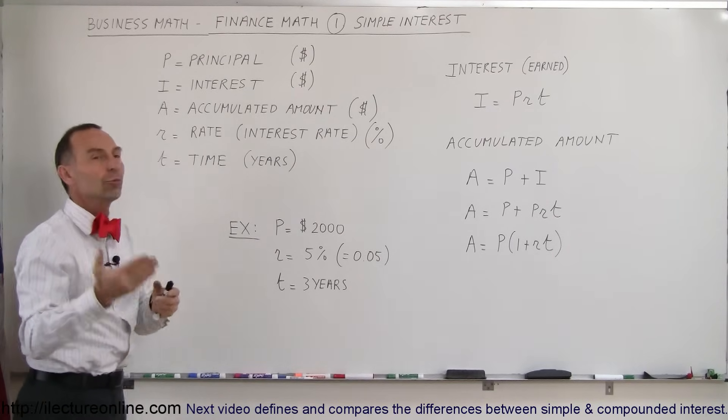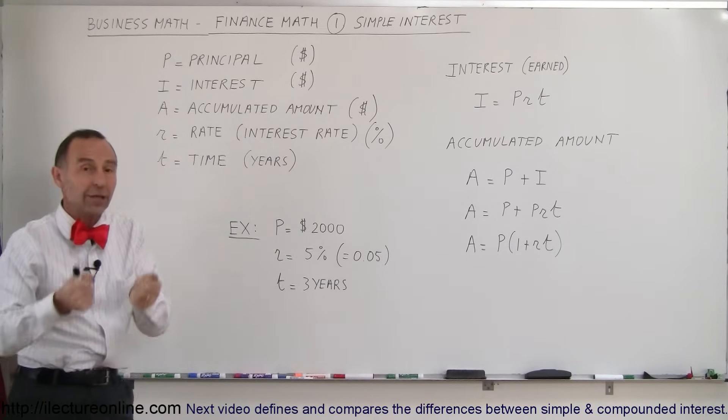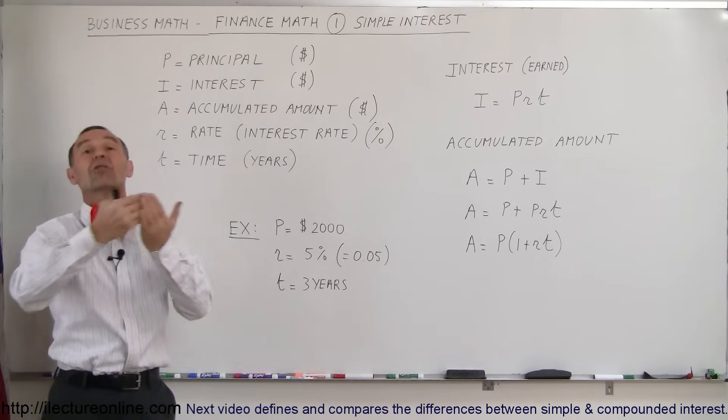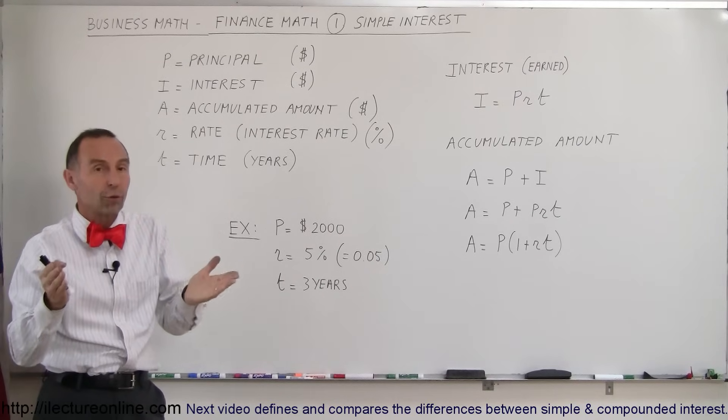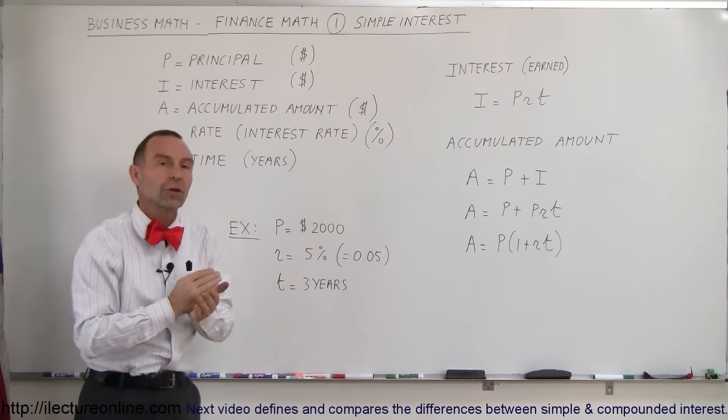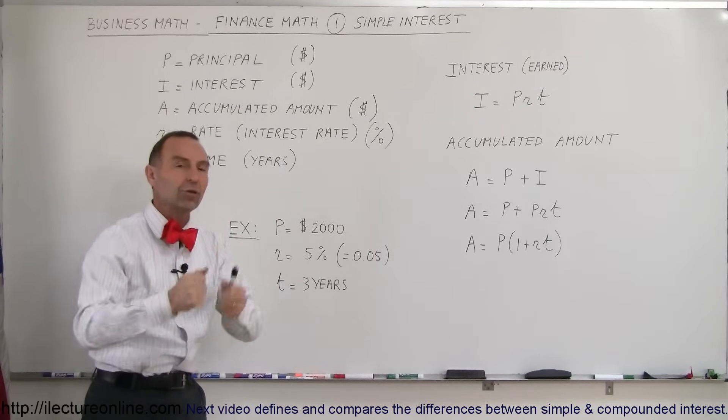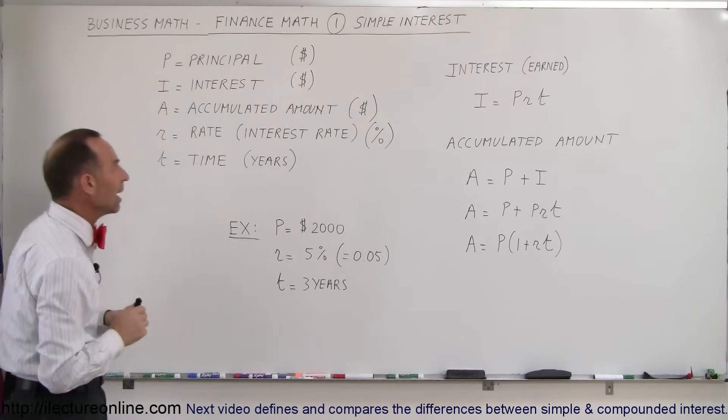A stands for accumulated amount. The total amount that you end up with will be the initial principal you put in the bank plus whatever interest you earn on top of that. So the two combined will form the accumulated amount. So the more interest you earn, the bigger the accumulated amount which is added to the initial principal investment that you made.